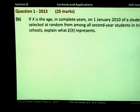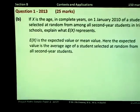Part B, if X is the age in complete years on the 1st of January 2010 of a student selected at random from among all second year students in Irish schools, explain what E(X) represents. E(X) is the expected value or the mean value. So here the expected value is the average age of a student selected at random from all second year students.